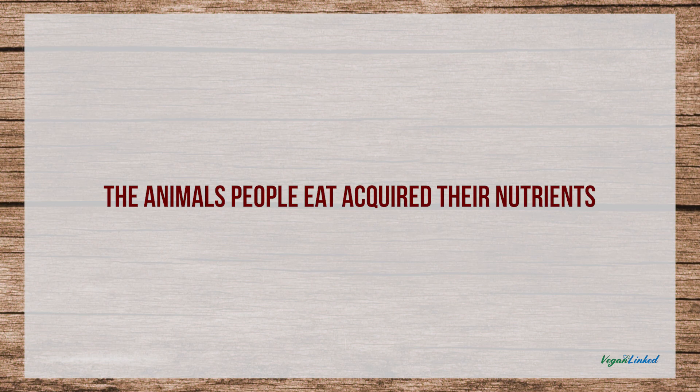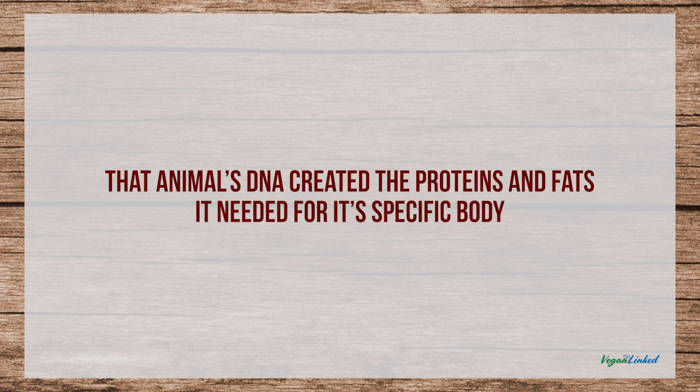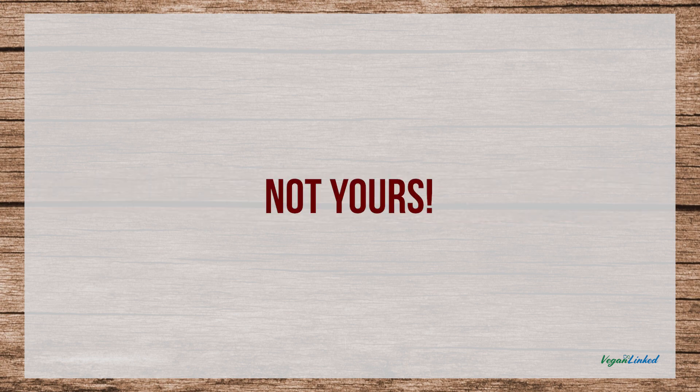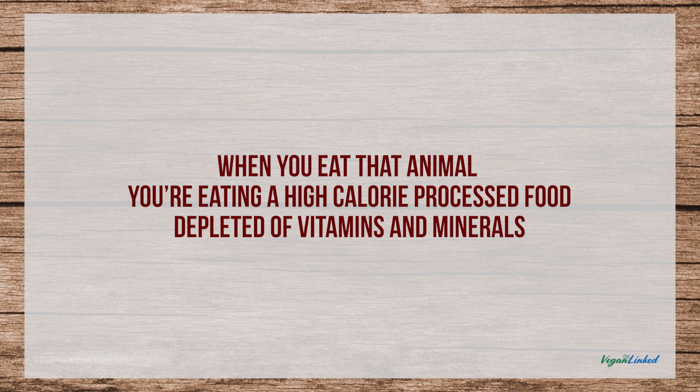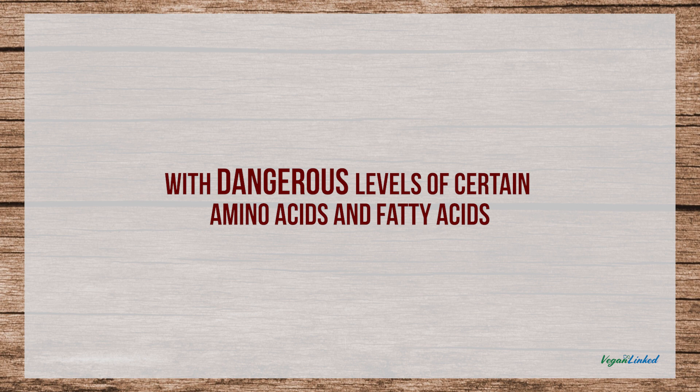The animals people eat acquired their nutrients from plants. That animal's DNA created the proteins and fats it needed for its specific body — not yours. As a result, when you eat that animal, you're eating a high-calorie processed food depleted of vitamins and minerals, with dangerous levels of certain amino acids and fatty acids.